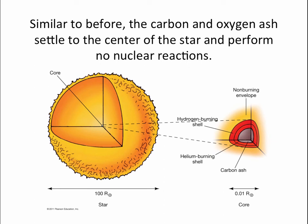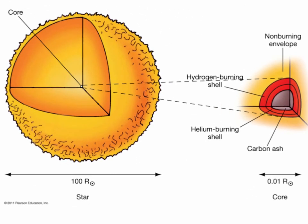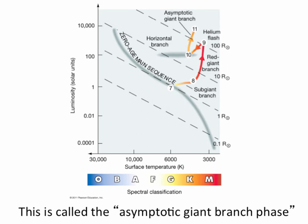Carbon and oxygen won't do any further fusion in a sun-like star. So once the core is carbon and oxygen and the helium runs out, fusion will again stop at the center. Just like before, gravity pulls the core inward, and fusion now happens in two shells outside the central carbon-and-oxygen ash core. The sun swells up again, becoming even bigger than before, with cool outer layers but still very bright — it becomes a red giant again. This is called the asymptotic giant branch. Don't worry about the name — it's just a second red giant phase.